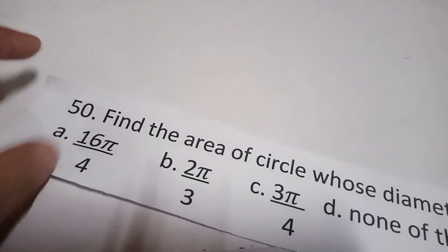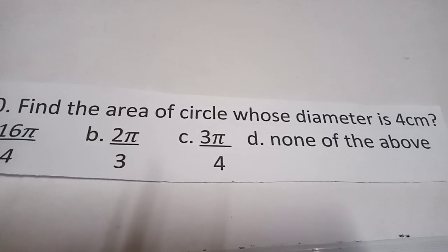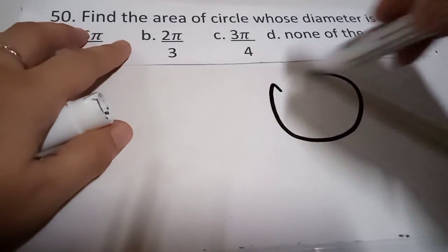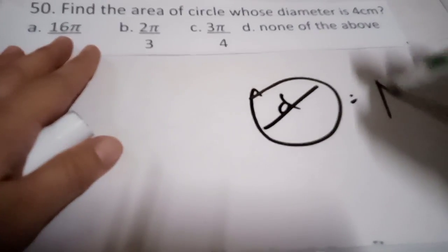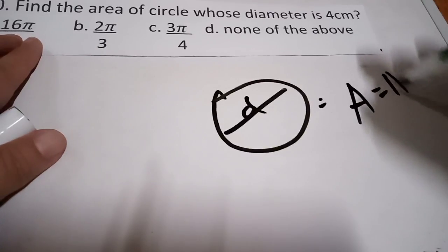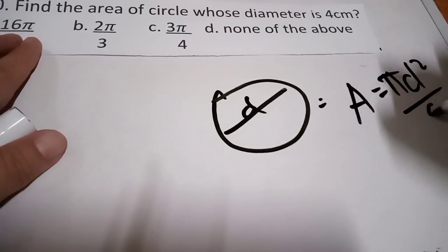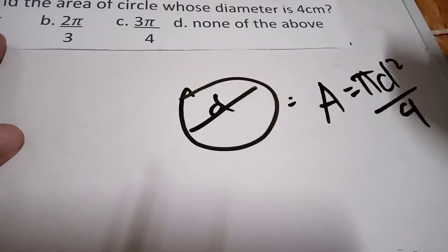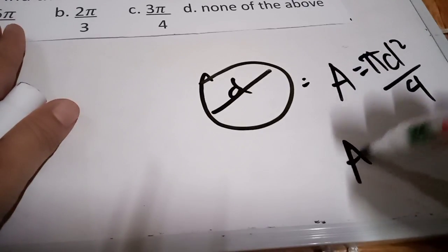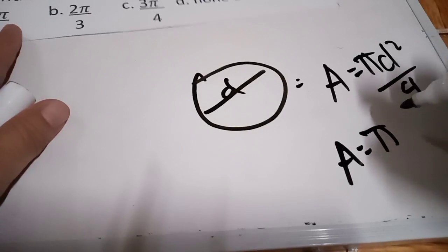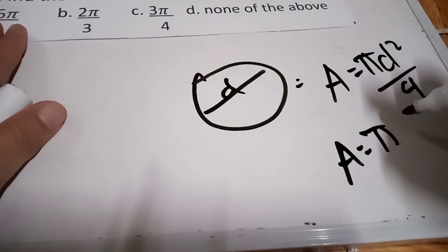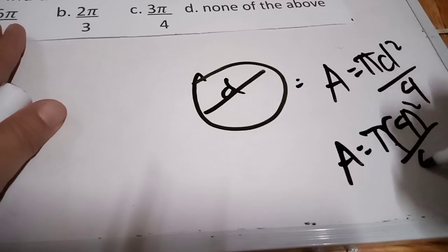Find the area of the circle whose diameter is 4 centimeters. We know this is the circle and this is what you call the diameter. The formula is: Area equals pi times d squared over 4 — using diameter, not radius. So Area equals pi times 4 squared over 4.